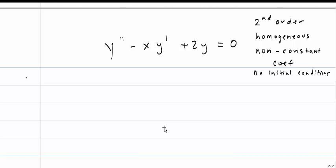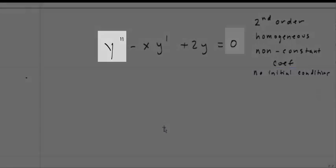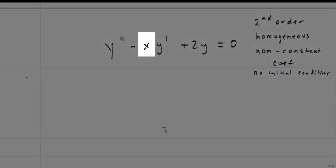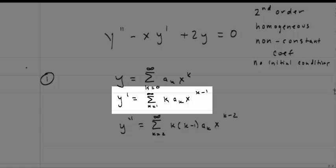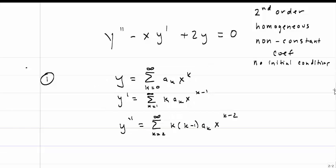Let's start with the equation y double prime minus x times y prime plus 2y equals 0. This is a second-order differential equation — it's homogeneous and has non-constant coefficients because of the x. I'm noting that I don't have initial conditions, so I'm expecting two arbitrary constants in my solution. Step 1: assume y equals the summation from k equals 0 to infinity of a_k times x to the k, so y prime equals the summation from k equals 1 to infinity of k times a_k times x to the k minus 1.